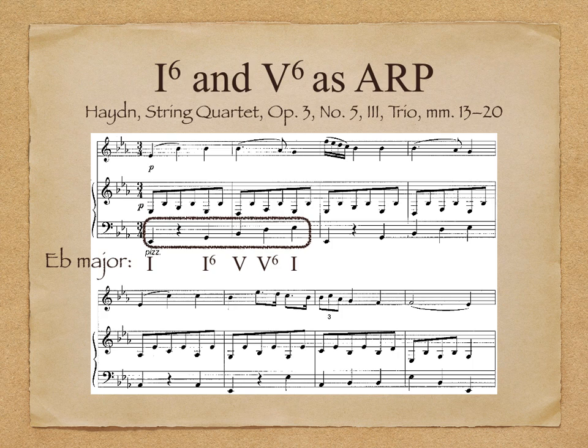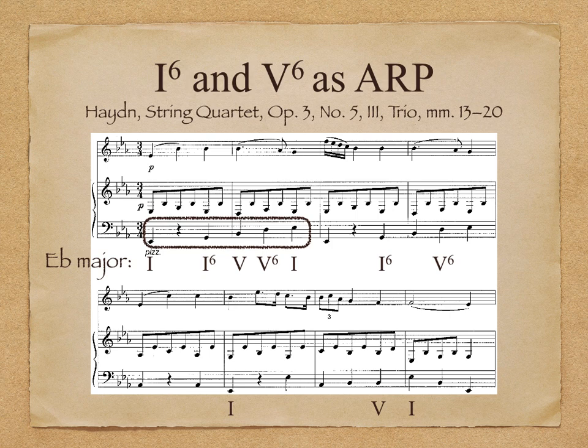The bass pattern is repeated again in the next two measures, and features the same first inversion chords, which help prolong the I chord until the end of the phrase where we get an imperfect authentic cadence. Remember, that F suspended over the tonic triad in the cadence does not delay, but instead intensifies the cadence. Listen to the Haydn again and follow along with the analysis. Try to hum the bass line if you can.